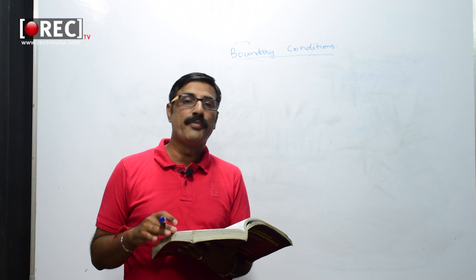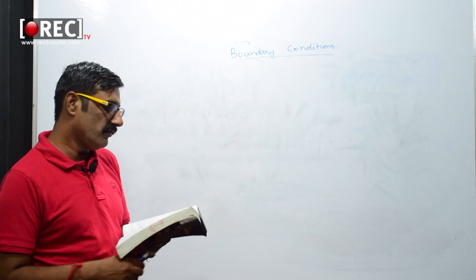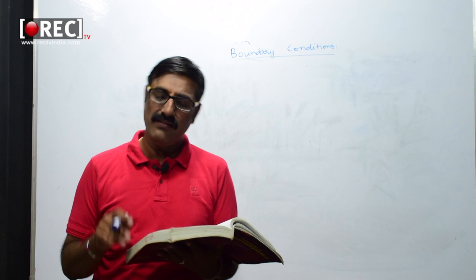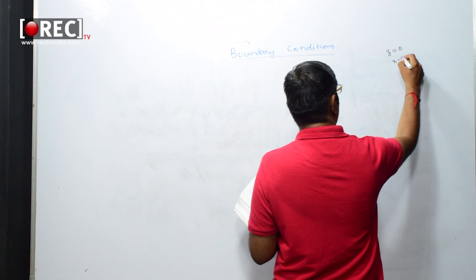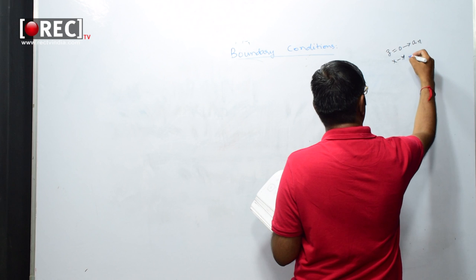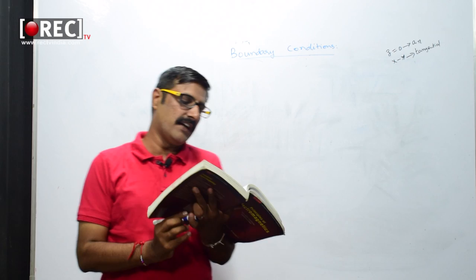Let us work out one problem on this concept — turn to page 155 of Sadiku, example number 4.5. Two extensive homogeneous isotropic dielectrics meet on the plane z equals zero. So at z equal to zero, they meet up. That means z equals zero signifies the xy plane. The normal vector will be along the z-axis, and the xy plane contains the boundary surface, which contains the tangential component.